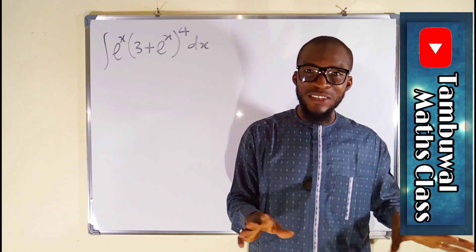Now let us do back substitution because our initial function is in terms of x. From our substitution, u is 3 plus e to the x, so we replace that. We can write 1 over 5 as a factor, and u becomes 3 plus e to the x raised to the power of 5. Then plus the constant of integration. And hence, this is the solution to this integration.